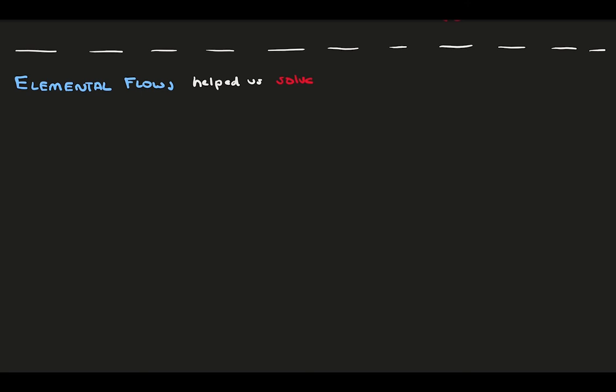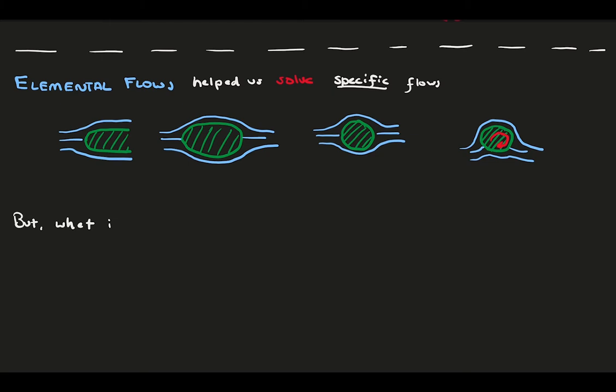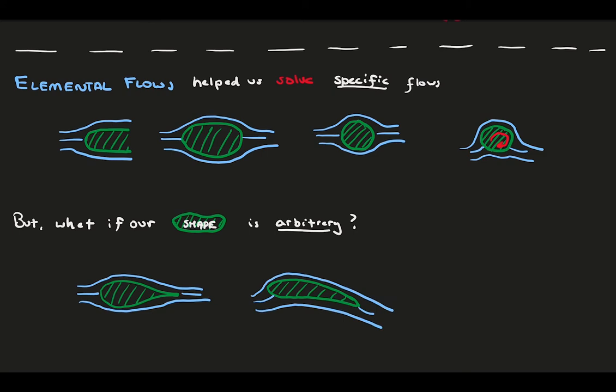Over the last few videos, elemental flows have taken a front seat, and for good reason. We can build some interesting flow fields that mimic flows over specific bodies using a combination of only a few building blocks. We covered the semi-infinite body, the Rankine oval, the stationary cylinder, and the rotating cylinder, which got special attention because of its lift characteristics. But so many aerodynamic applications deal with a ton of different shapes. What if we want to develop a method for arbitrary shaped bodies? The method we'll develop today will be applied to things like airfoils, fuselages, and many other aerodynamic bodies. And this brings us to panel methods.